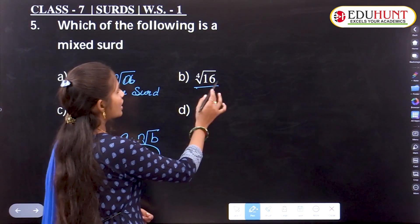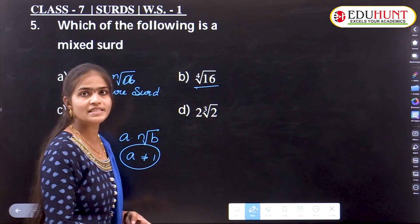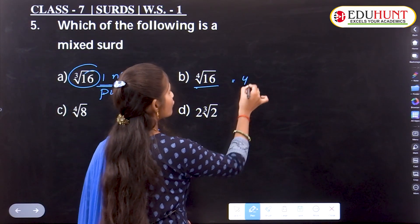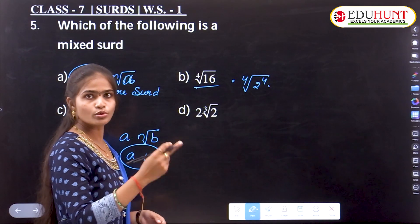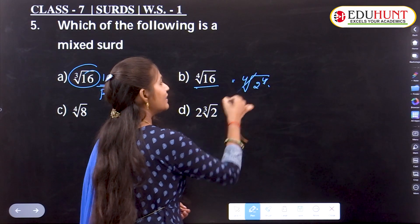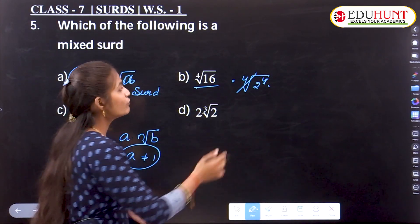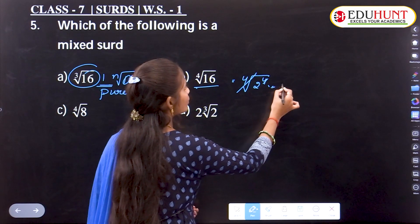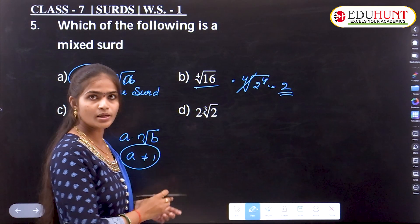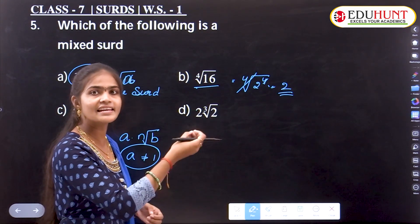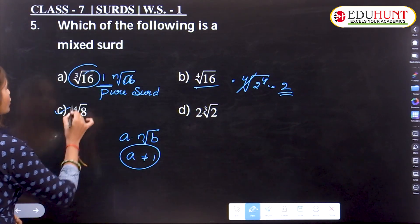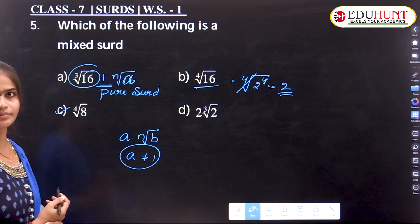Next, fourth root of 16 — is it a pure surd or mixed surd? We can write fourth root of 16 as fourth root of 2⁴. Since the power and root have the same order, the 4s cancel, giving us 2. So this is a rational number, not a surd at all.